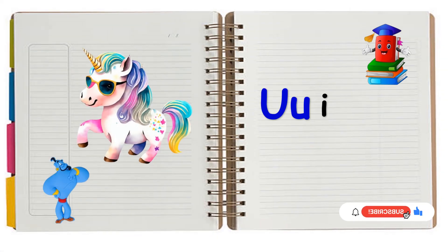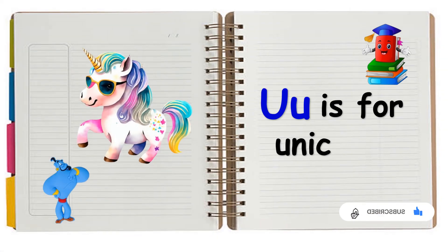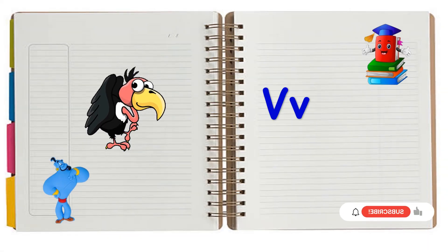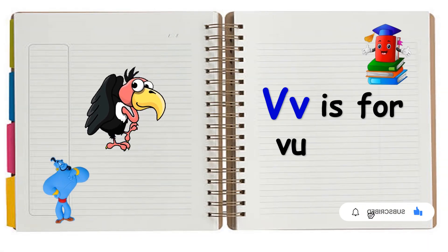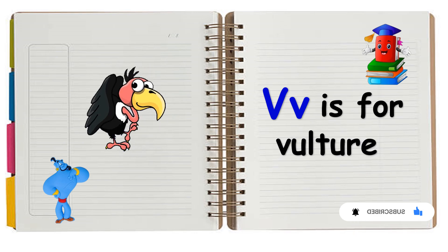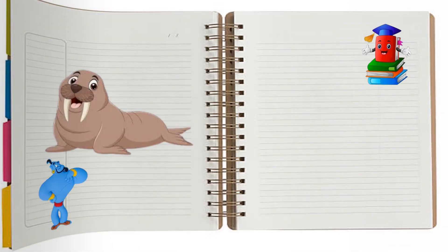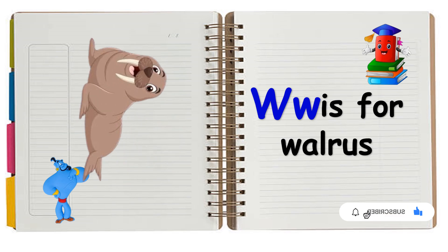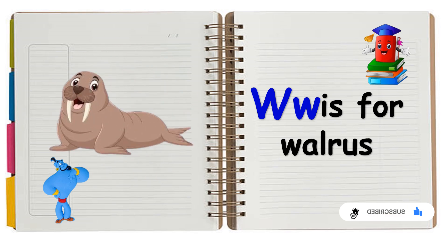U is for Unicorn. U, U, Unicorn. V is for Vulture. V, V, V, Vulture. W is for Walrus. W, W, Walrus.